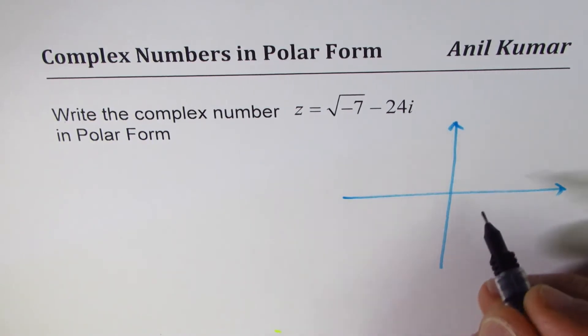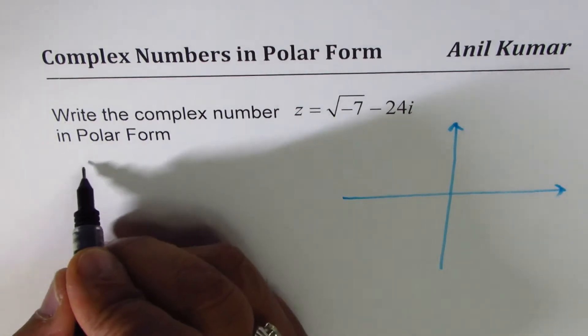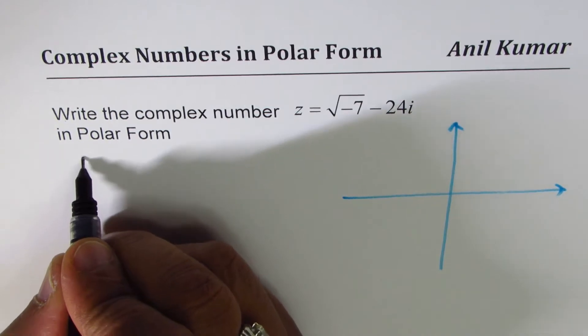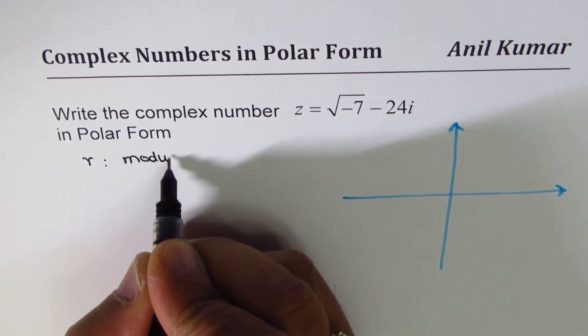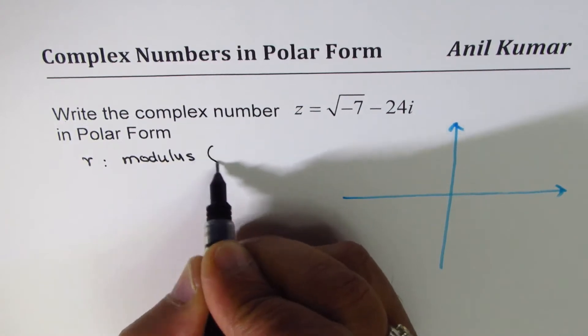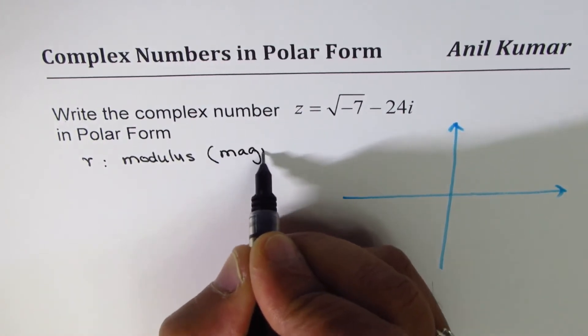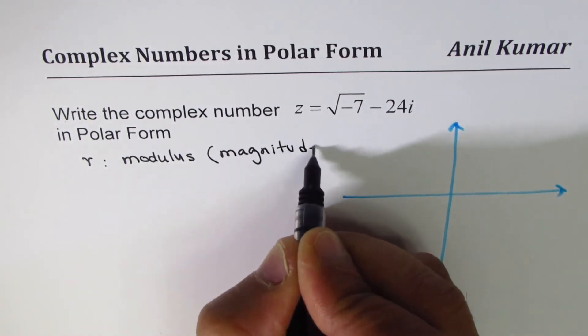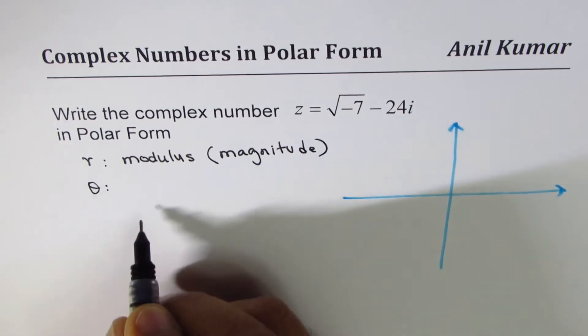In polar form we are talking about two things: one is r, which is modulus or magnitude, and second is theta.